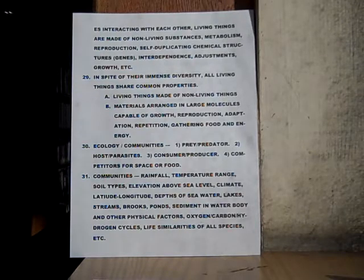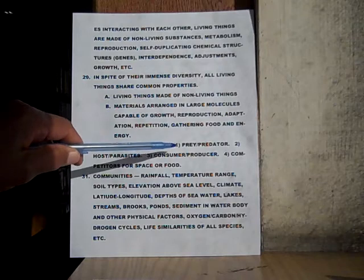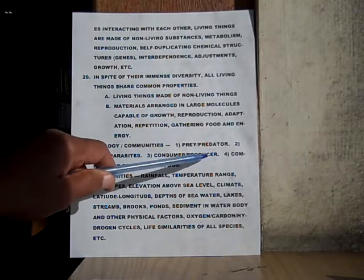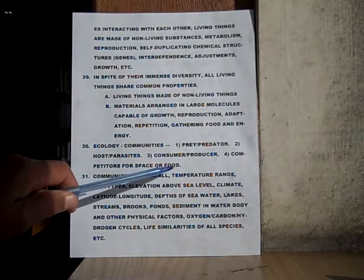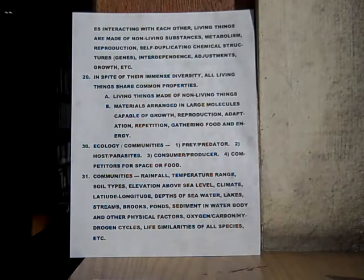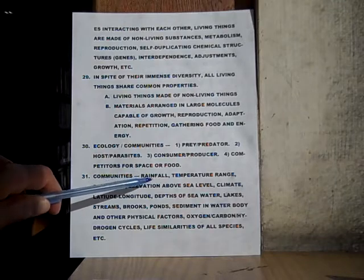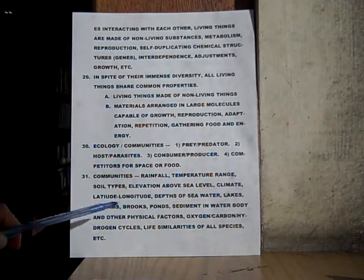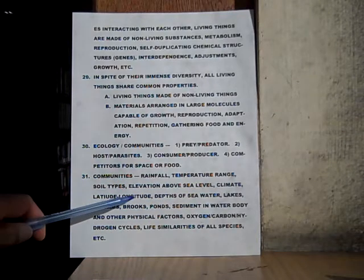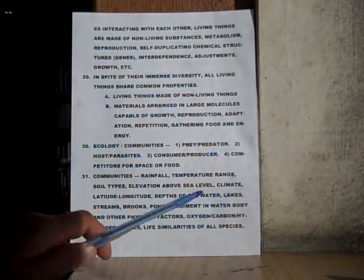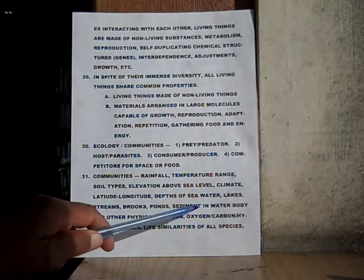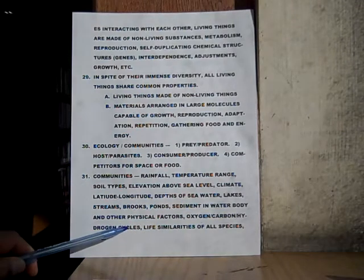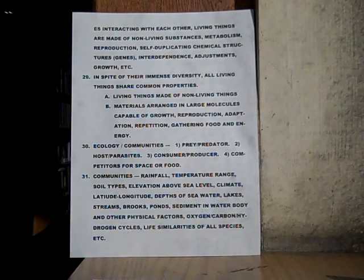Number thirty: ecology slash communities, which includes — one: prey and predator; two: host and parasites; three: consumer and producer; four: competitors for space or food. Number thirty-one: communities include rainfall, temperature range, soil types, elevation above sea level, climate, longitude and latitude of where they are, depths of seawater, lakes, streams, brooks, ponds, sediment in water bodies and other physical factors — oxygen/hydrogen cycles, life similarities of all species, etc.